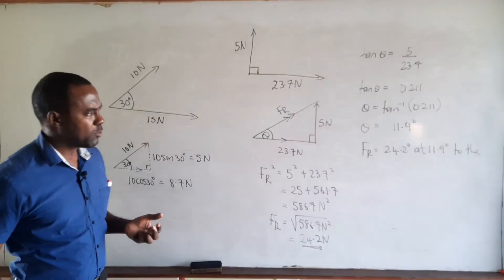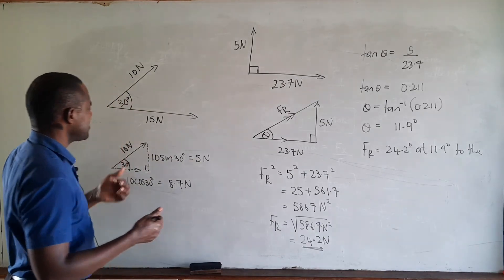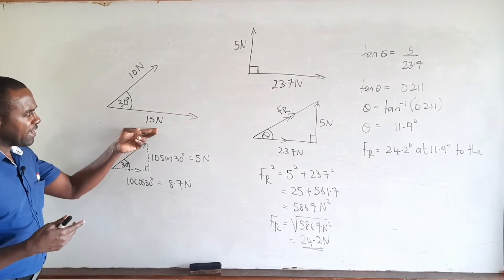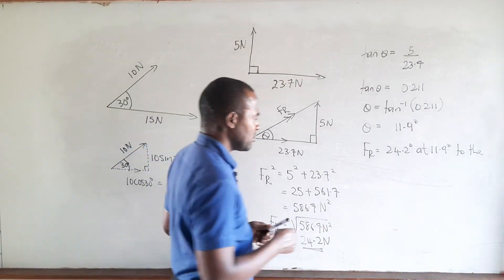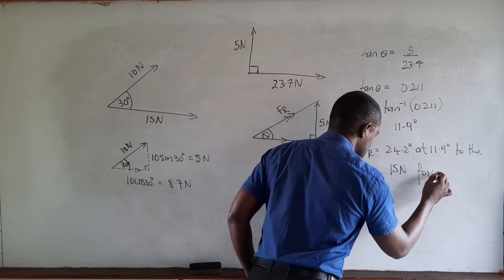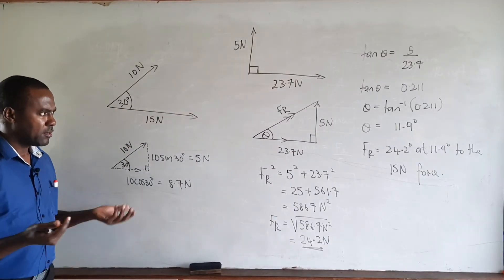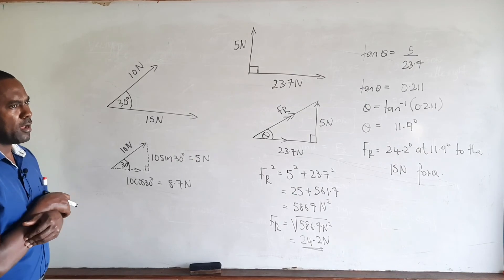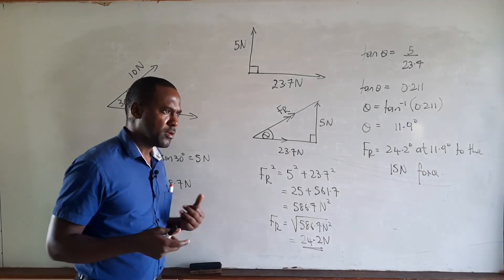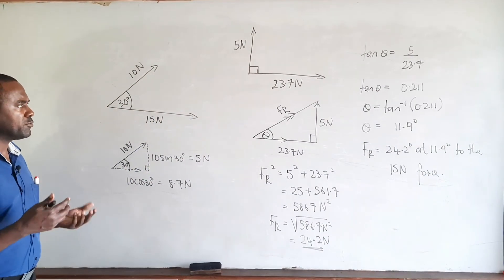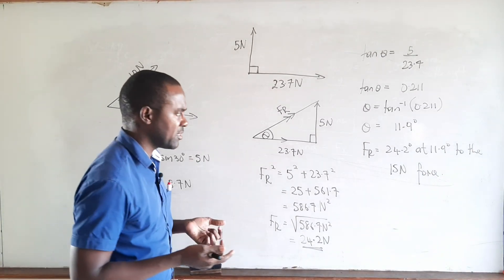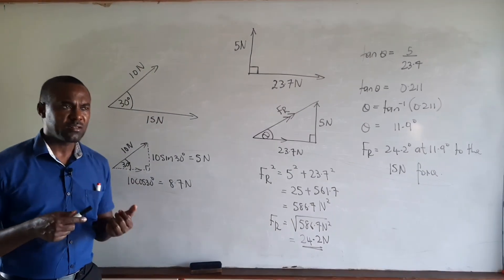Since in the original diagram the 50 Newton force was given as horizontal, we state the resultant as FR equals 24.2 Newtons at 11.9 degrees to the 50 Newton force. In summary: we were given two forces acting at a non-right angle, so we couldn't use Pythagoras directly. We resolved one force into its components, obtained perpendicular forces, then used Pythagoras' theorem for the magnitude and a trig ratio for the direction of the resultant.